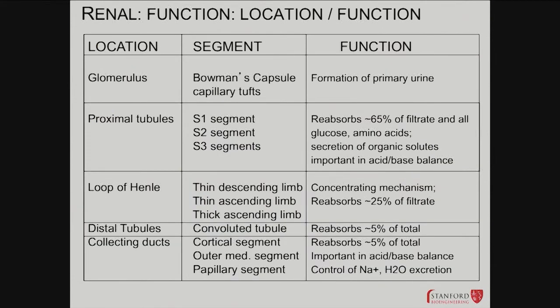In terms of the different roles these different components play, delving into that in more detail: the glomerulus is where almost everything gets filtered out initially, forming what's called the primary urine. Then you've got the proximal tubules, loop of Henle, and distal tubules.